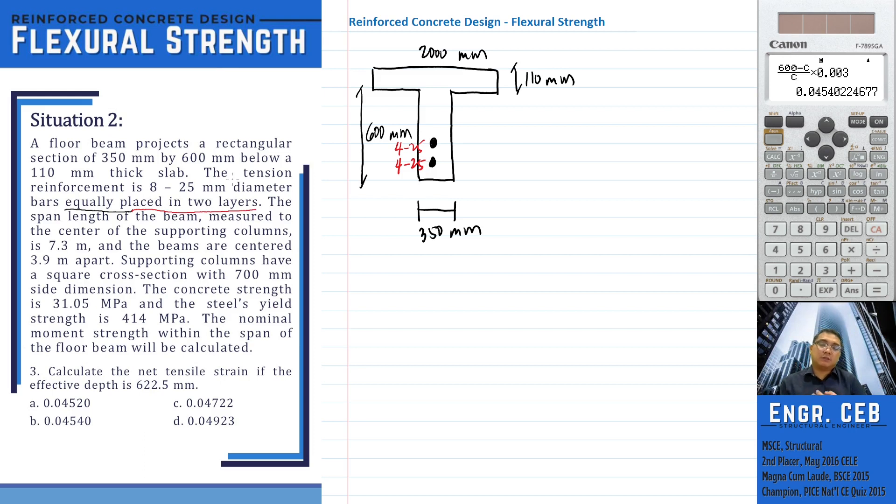So meaning there are four on the first layer and four bars on the other layer. So the effective depth, 622.5. So when you say effective depth, that is from the extreme fiber in compression up to the center of the reinforcement.